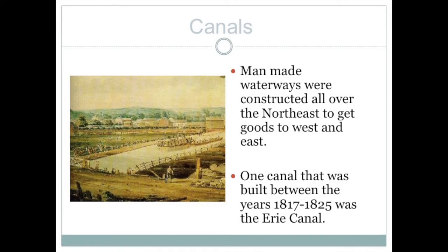One major national goal was to create an easier way to get from the country to the cities so farmers could have a market for their goods. One solution was canals — man-made waterways connecting larger bodies of water, acting as a water superhighway. Hills were navigated by a series of locks that allowed water to rise and fall, moving boats up and down. The most famous was the Erie Canal, built between 1817 and 1825, connecting Lake Erie with the Hudson River and subsequently with New York City, allowing cities like Buffalo to have access to a seaport.